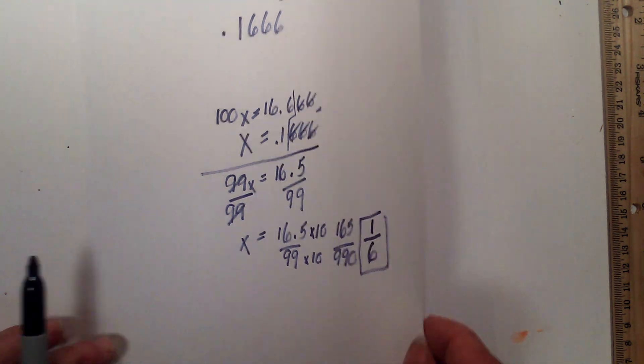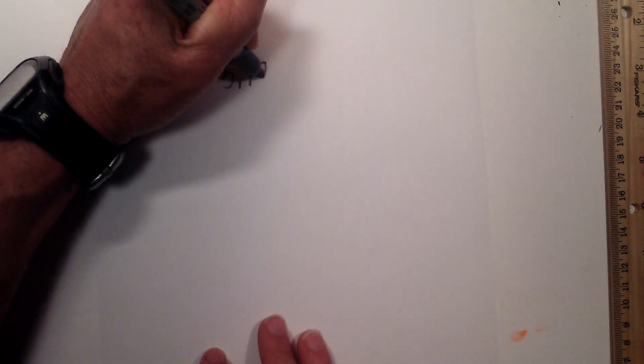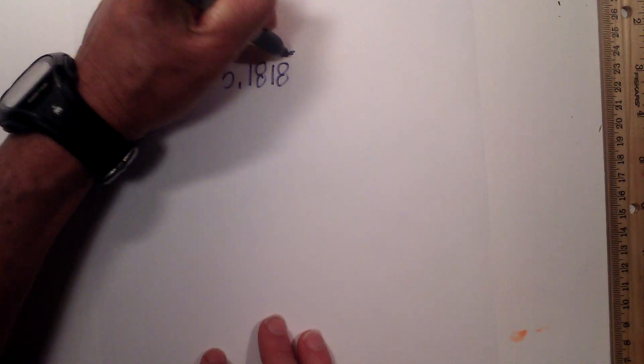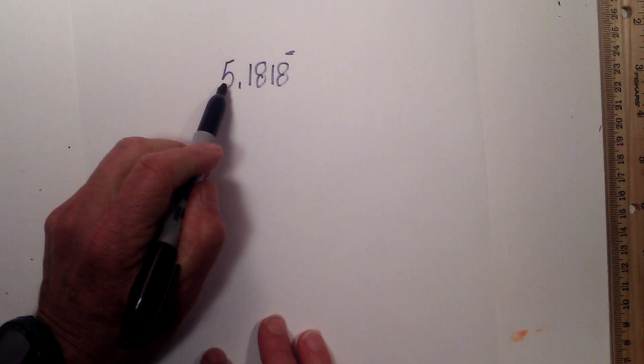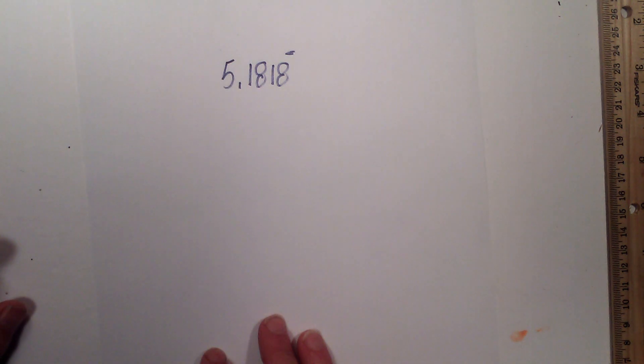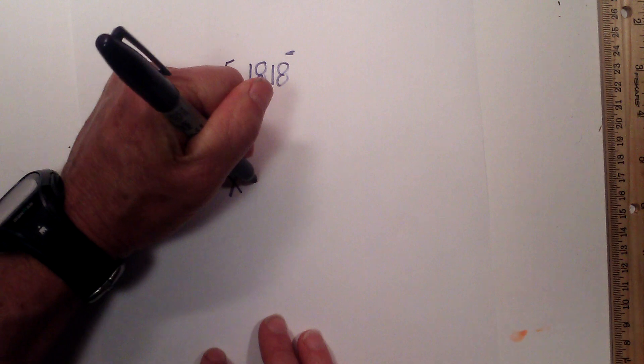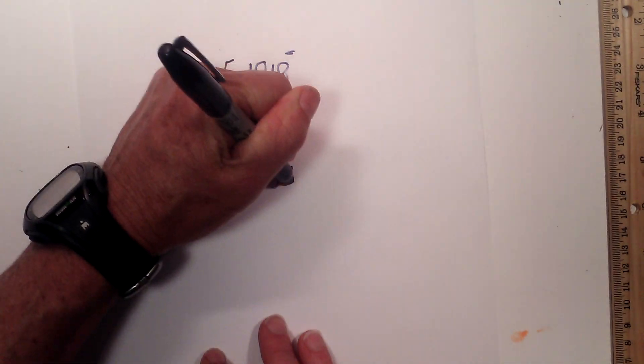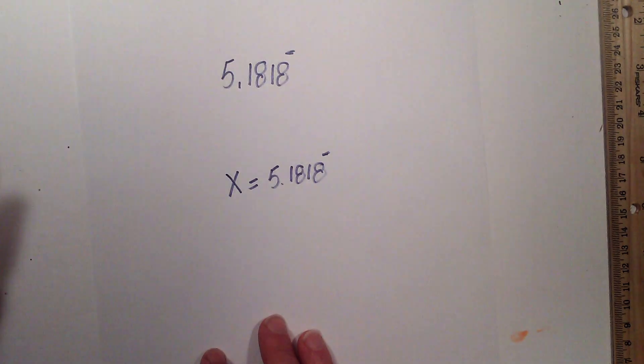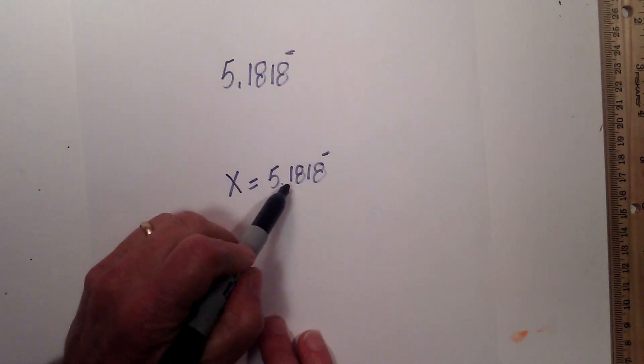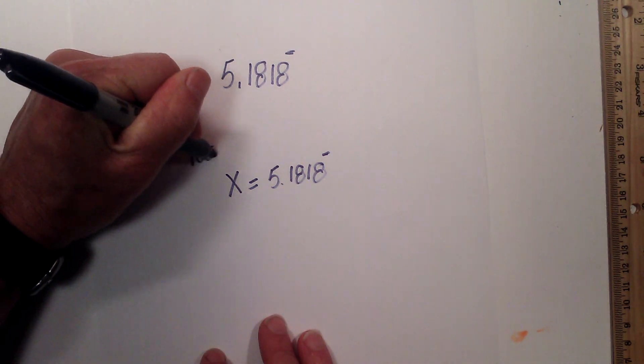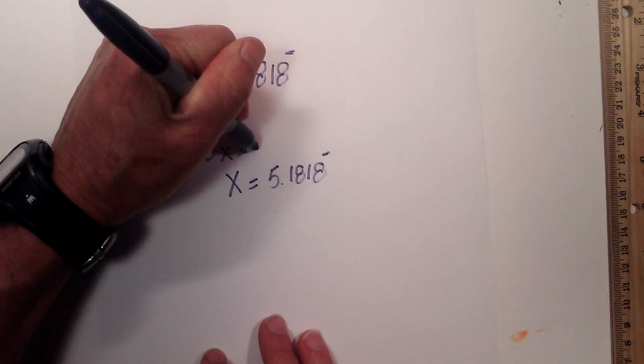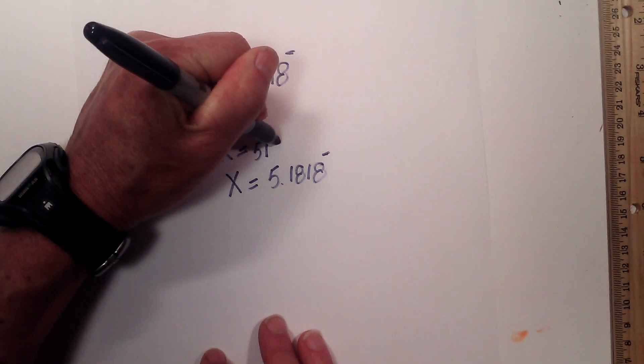And finally the last one you may encounter is something like this. Let's go with 5.1818 repeating. You have a non-repeating number and then a repeating decimal. Again set up x is equal to 5.1818 repeating. I need 1818 to the left of the decimal, so I am going to multiply it by 100. That becomes 518.1818.